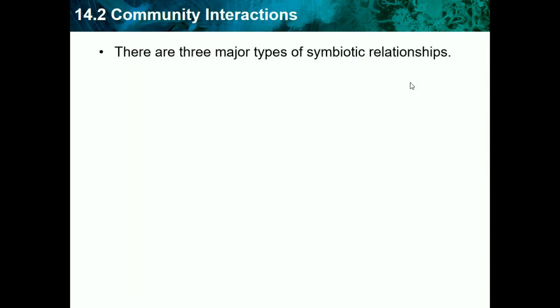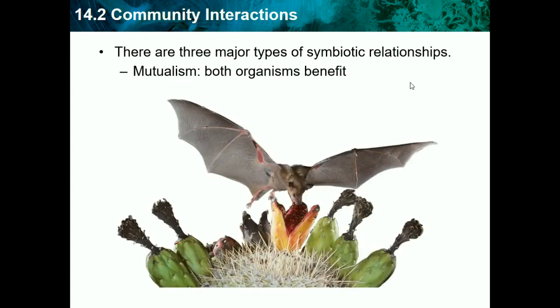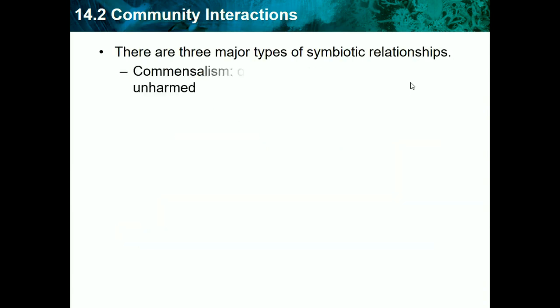There are three major types of symbiotic relationships. Mutualism is when both organisms benefit. For example, a bat eating from a cactus: the bat gets food, and the cactus gets its seeds spread so it can reproduce. Both organisms benefit.